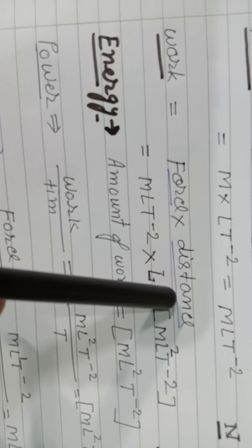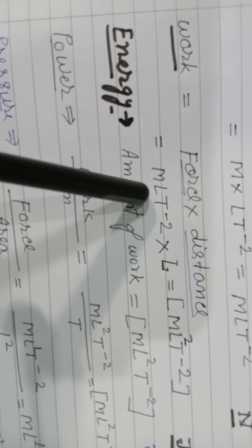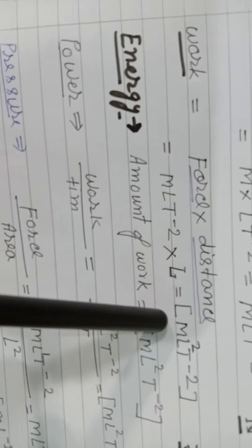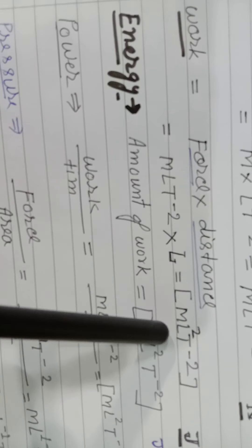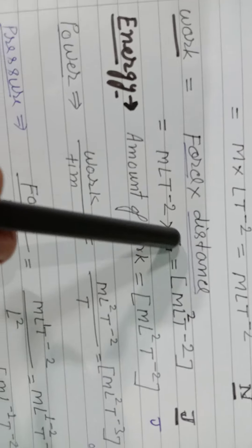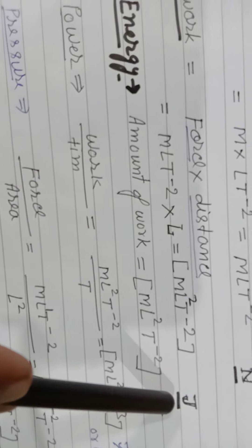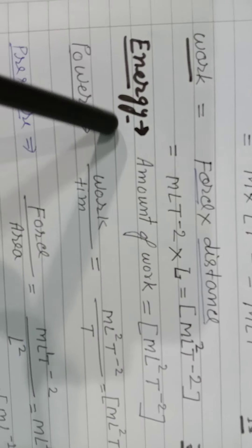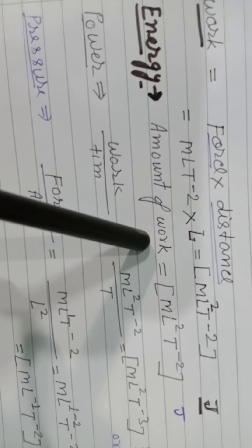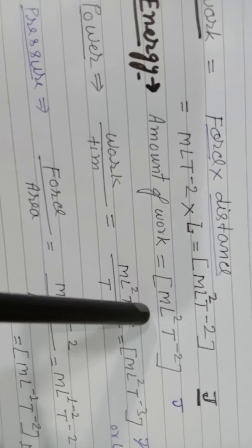Work equals Force into distance. For Force the dimension is [MLT⁻²], and distance is L, so Work = [ML²T⁻²]. Energy is the capacity to do work, so energy has the same dimension as work: [ML²T⁻²].